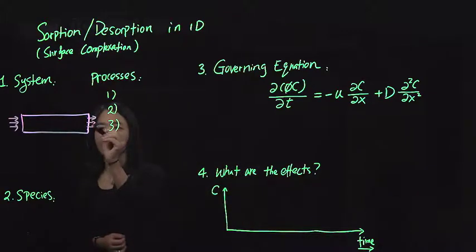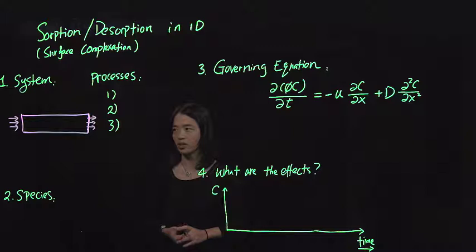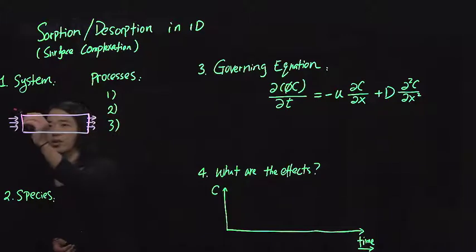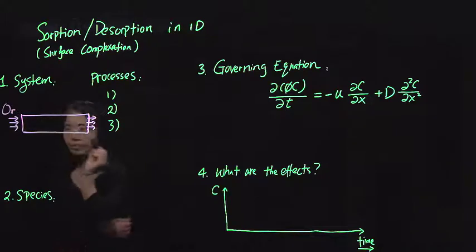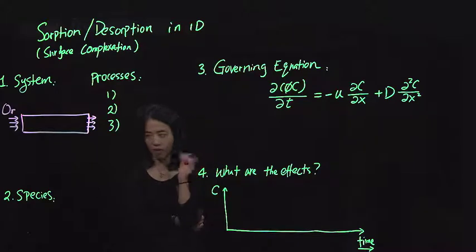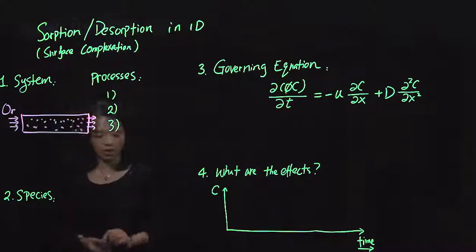So let's say we have a sorbing chemical going through the system, which is different from the non-reacting tracer before. So this is maybe an organic material. Let's call it OR. So going through the system, it's going to attach to some of the solid phase in the porous media.